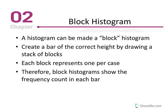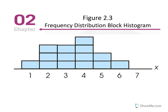A block histogram, just as I mentioned a minute ago, a block histogram can be made. Create a bar of the correct height by drawing a stack of blocks. Each block represents one per case, therefore the block histogram shows the frequency count in each bar. So here's the illustration, and what's different is just that we don't have an official ordinate, the y-axis is missing, so it looks slightly different. It's a little easier and quicker to construct, but it's not readily used. So it is presented in this chapter, but we don't use it very often. But if you were to be presented this type of graph, you would recognize that it's referred to as a frequency distribution block histogram.